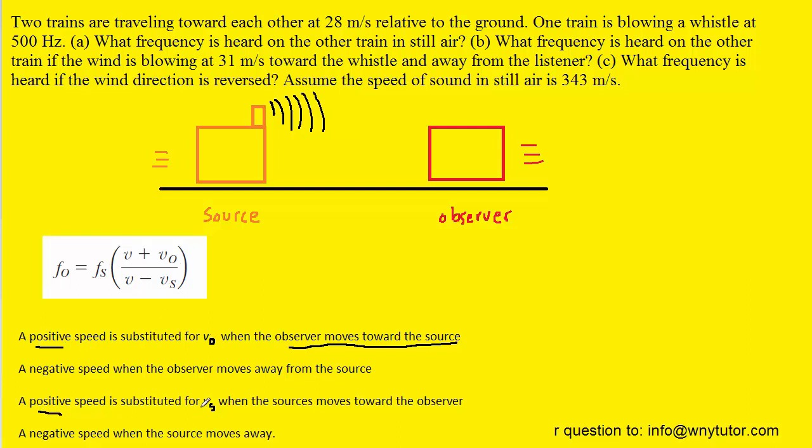And similarly a positive value for the speed of the source, Vs, is going to be used again when the source is moving towards the observer. So in fact when we plug in for Vs we're going to use a positive value just like for V0.